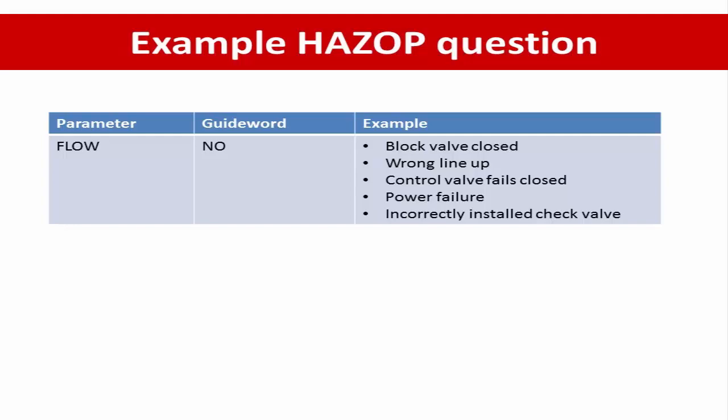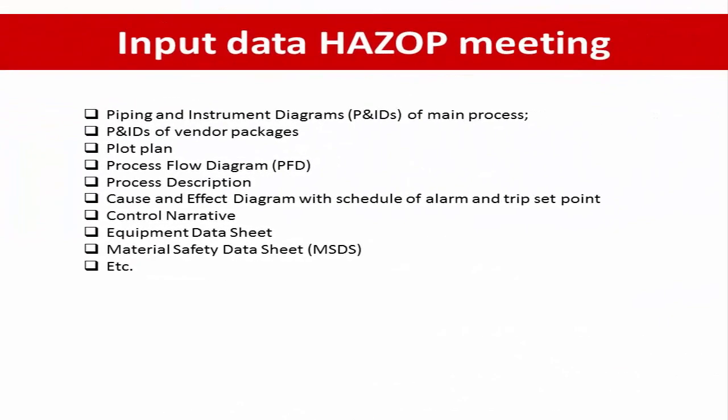Input data to be prepared for the HACCP meeting: the most important document is the Piping and Instrument Diagram for the main process or for the vendor package. Other inputs include the plot plan, process flow diagram, process description, cause and effect diagram with schedule of alarm and trip set points, control narrative, equipment data sheet, and material safety data sheet. These are the most used information during the HACCP meeting.